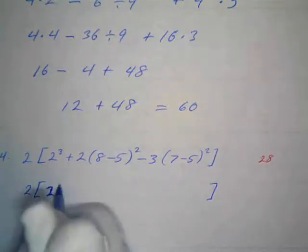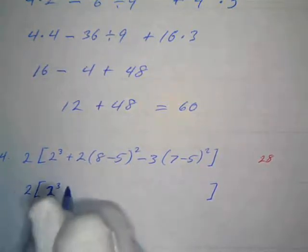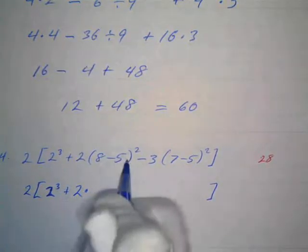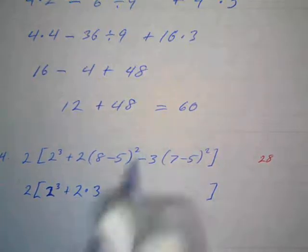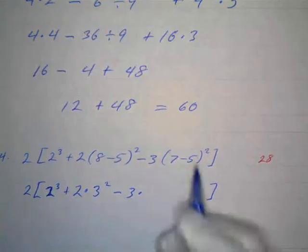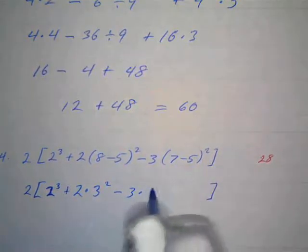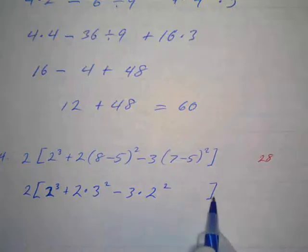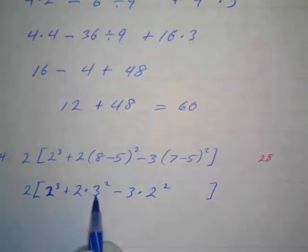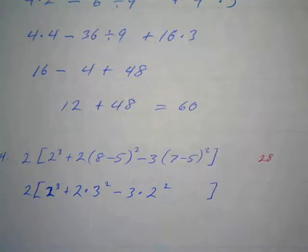And we're just going to take care of parentheses first. PEMDAS. I rewrite 2 cubed plus 2 times, and what's 8 minus 5? That's 3. So instead of writing 8 minus 5, I'll write 3, just substitute that. And that's going to be squared, minus 3 times, and what's 7 minus 5? That's going to be 2. So 2 squared. So we just did the parentheses inside the parentheses. 8 minus 5 is 3, 7 minus 5 is 2, so I've simplified inside the parentheses.